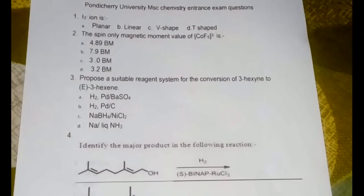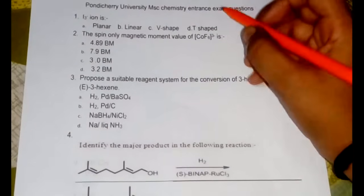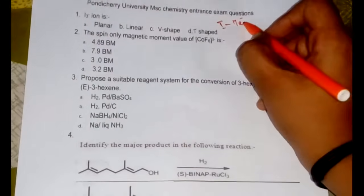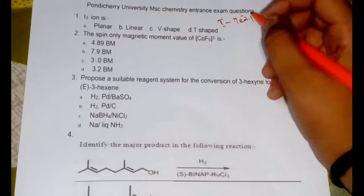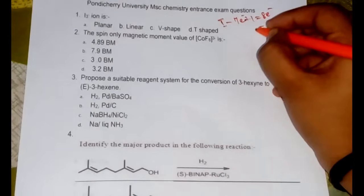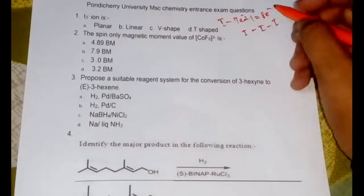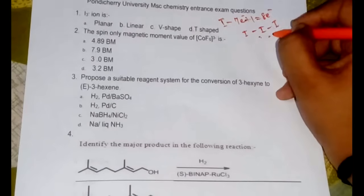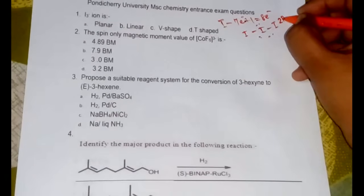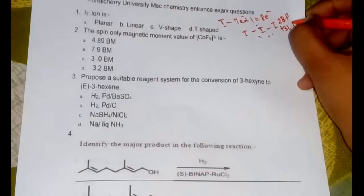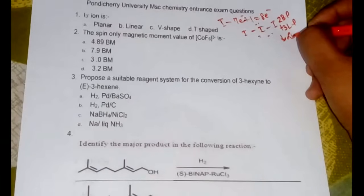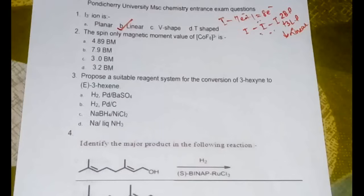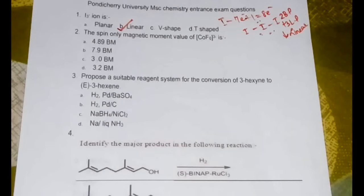I3- ion: what we should do first is iodine is having seven electrons plus one from the negative charge, so total of eight electrons would be there. Then out of these eight electrons, two are used for bonding each with both of the iodine and remaining we have one, two, three, four, five, six, seven, and eight. So we are having two bond pairs plus three lone pairs which corresponds to linear shape. So option B linear would be the answer for I3- ion.